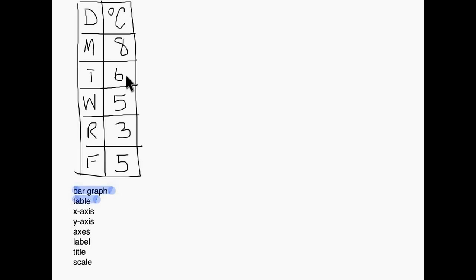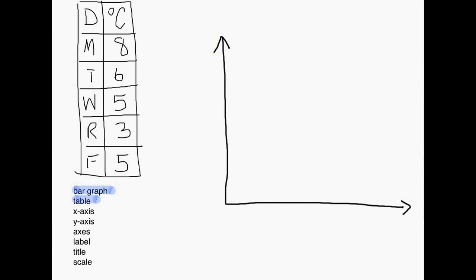Starting here I want to draw my y-axis and then my x-axis. Usually when we make graphs we put time down at the bottom — you don't have to do it this way, but usually that's how we do this. So I will write at the bottom the days: Monday, Tuesday, Wednesday, Thursday, and Friday. This is where each day the information will be.